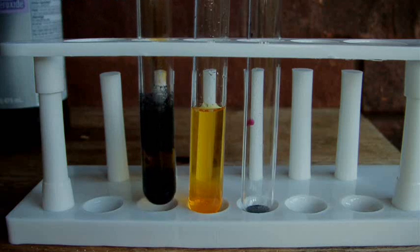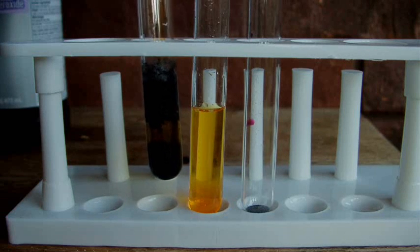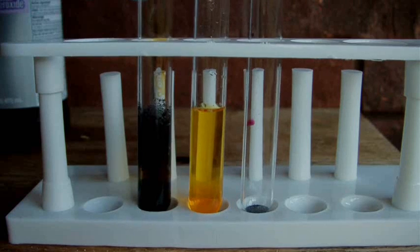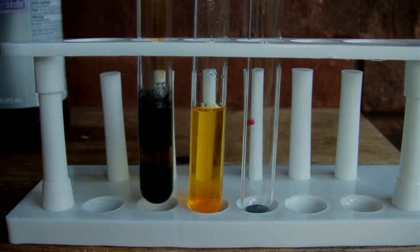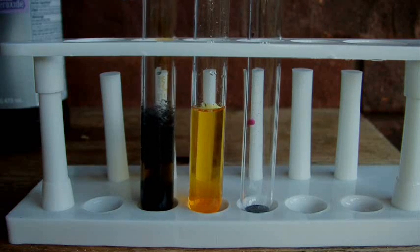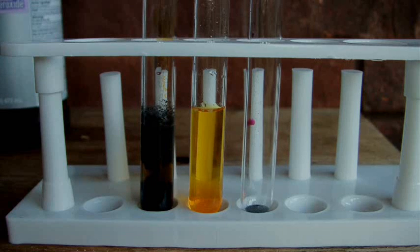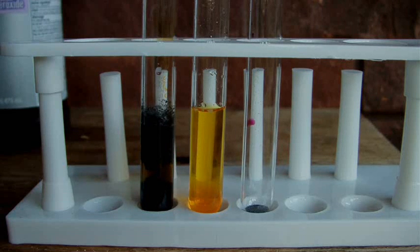Back to the left here on the iodine, you can see some of it is settling out. So that's definitely precipitated in a solid form. So we've got solid iodine on the left, aqueous bromine in the center, and on the right I'm going to make chlorine.